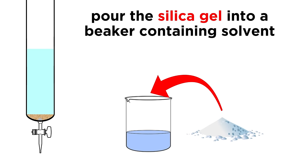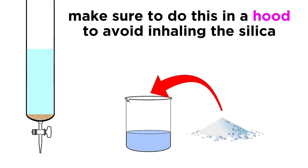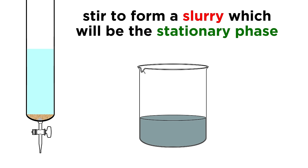Now we take a beaker of our solvent and pour in the dry silica gel, which is a powder, making sure to do this in a hood so as not to inhale the silica. Stir things up until we get a slurry, and this will act as the stationary phase in our column.